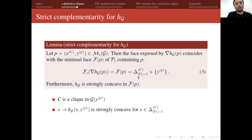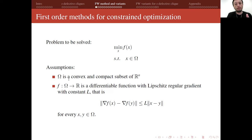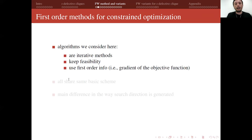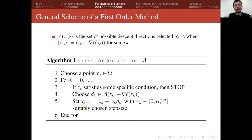We focus on first-order methods for constrained optimization using the classic minimization framework. The goal is to minimize F(X) over a feasible set Ω, where Ω is a convex and compact subset of ℝⁿ, and F is a differentiable function with Lipschitz-continuous gradient with constant L. All algorithms considered are iterative methods that maintain feasibility and use only first-order information. They share the same basic scheme; the main difference lies in how the search direction is generated at each iteration.